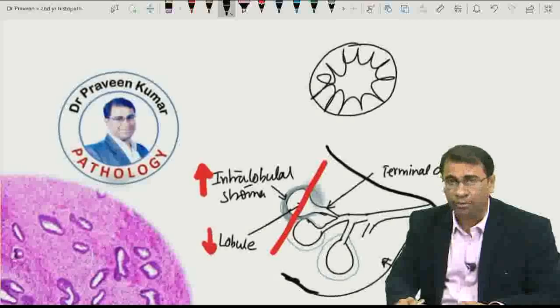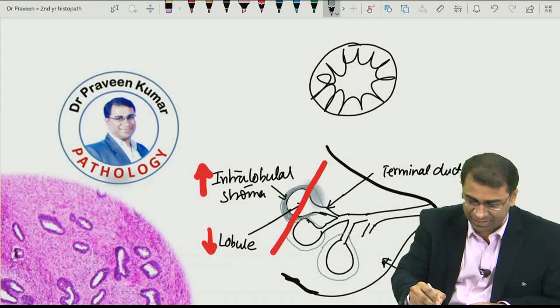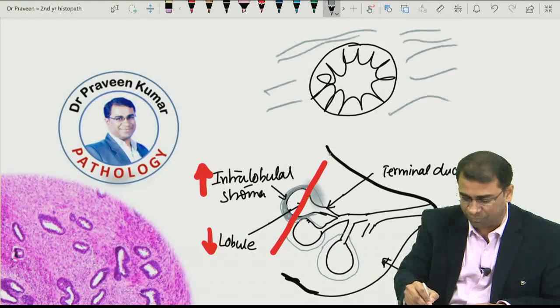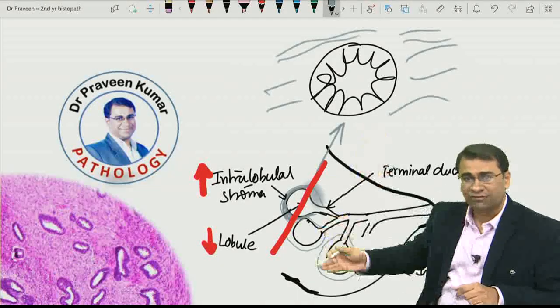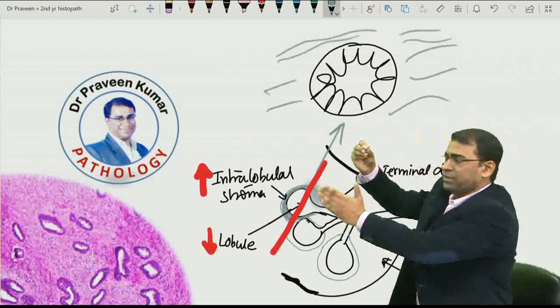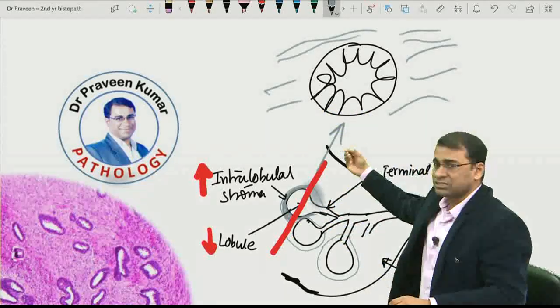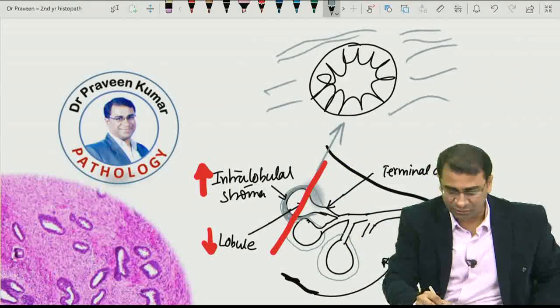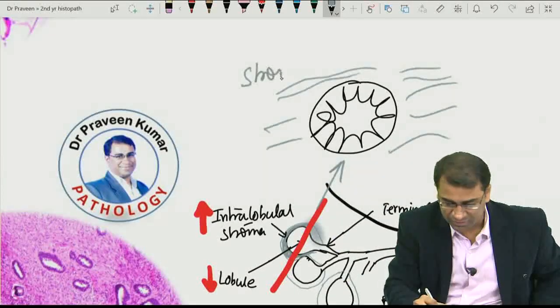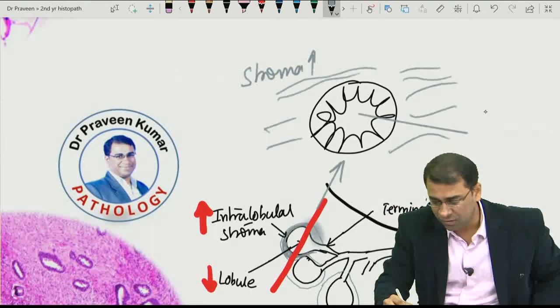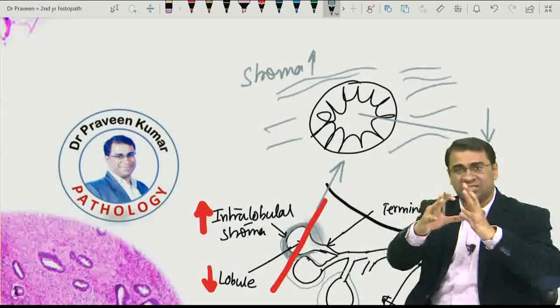Now, around the normal lobule, all this area here should be stroma. Imagine, I'm just cutting it from here. So, when you cut this from here, this is the lobule you are seeing here, and around them there is a stroma. What I am trying to say is, when the stroma increases, this will be decreased. It will be compressed like this.